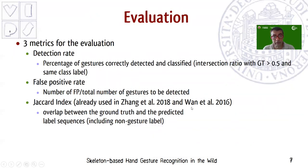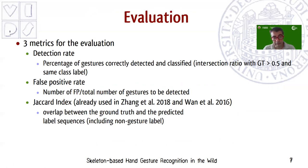For the evaluation of our contest, we consider three different metrics. The first is the detection rate: gestures are considered correctly detected and classified if they have an intersection larger than half the length of the ground-truth gesture with the detected gesture, and the gestures have the same class label. The detection rate is the percentage of gestures correctly detected over the total number of gestures of the class. The false positive rate is the number of false positive gestures not corresponding to real gestures divided by the total number of gestures to be detected. The Jaccard index measures the overlap between the ground-truth labels and the predicted labels, considering all frames including non-gesture labels.